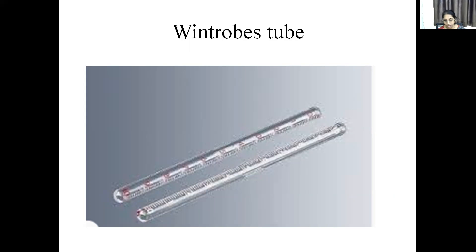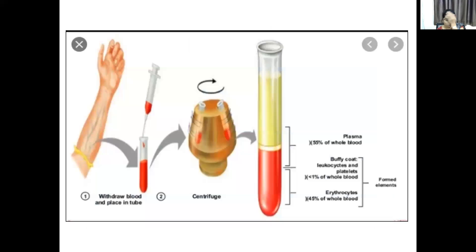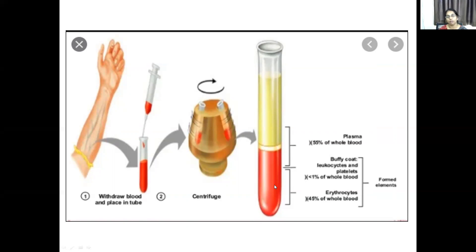Usually we do not measure ESR in the Wintrobe tube unless a Westergren tube is unavailable. Typically, the Wintrobe tube is used for measurement of packed cell volume, that is the hematocrit. Blood is drawn from the antecubital vein and EDTA blood is transferred into the PCV tube. The tube is placed in a centrifuge for 30 minutes at 3000 rpm. After centrifugation, three layers are seen in the Wintrobe tube.